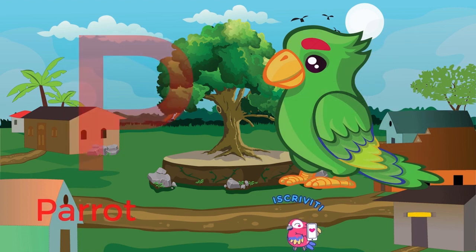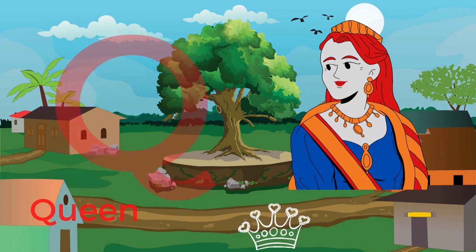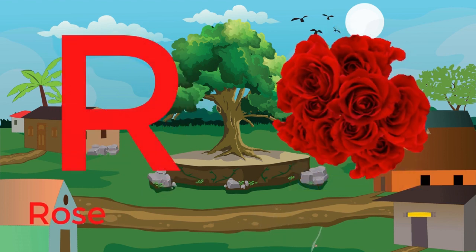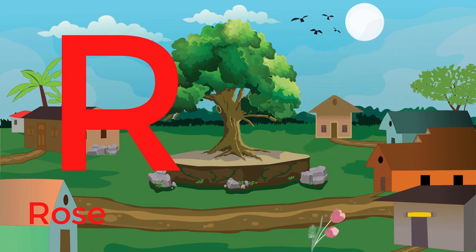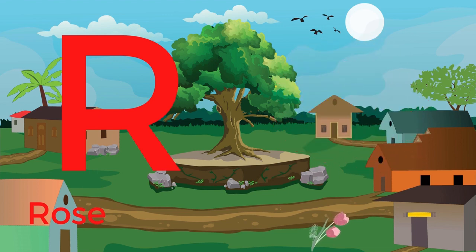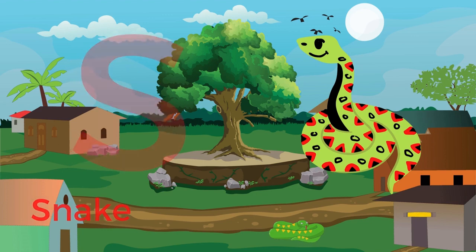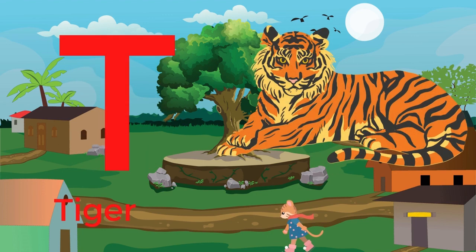Q for queen. R for rose. S for snake. T for tiger.